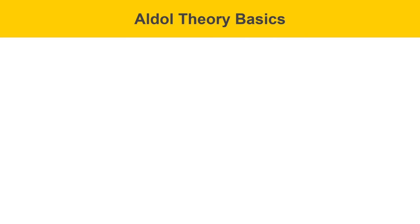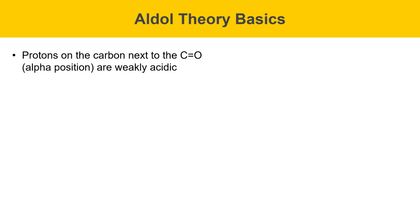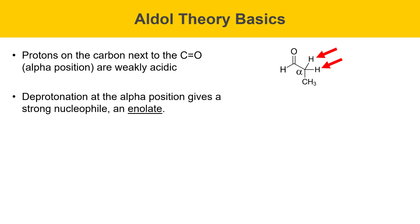Here are some aldol theory basics. Protons on the carbon next to the carbonyl group in an aldehyde or ketone, called the alpha position, are weakly acidic. The aldehyde in today's experiment is propanol. The alpha position here has two acidic protons. These can be plucked off by a base. Deprotonation of that alpha position gives a strong nucleophile called an enolate.